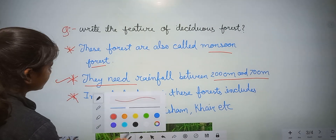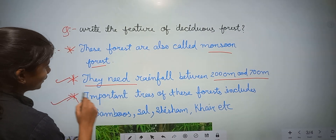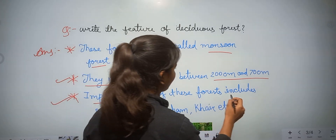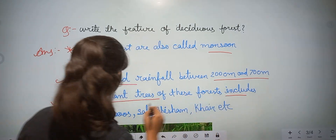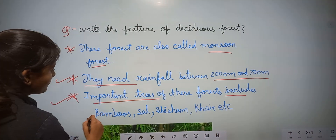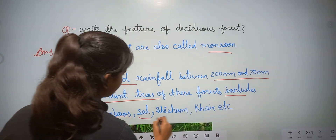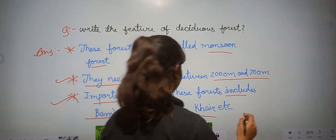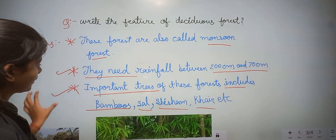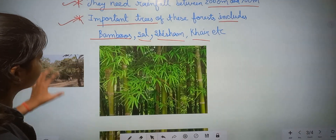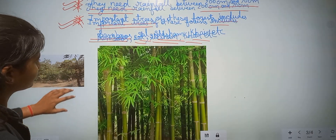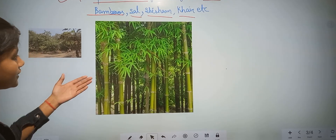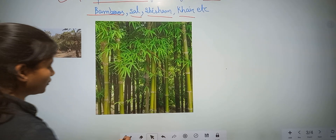Important trees of this forest include bamboo, sal, shisham, and curry. As you can see in the figure — this is bamboo.